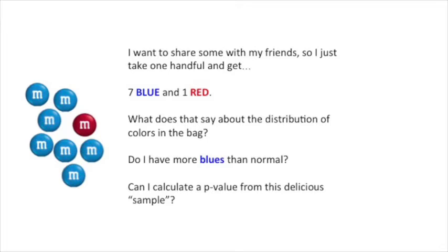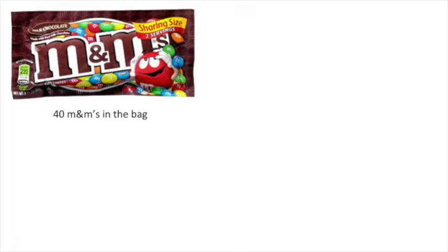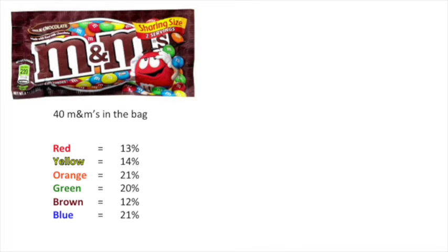Can I calculate a p-value from this delicious sample? This bag is supposed to have two servings and I think a serving of M&Ms is 20 M&Ms so there must be 40 M&Ms in the bag. I looked up the proportions of the different colors of M&Ms on the internet and this is what I found.